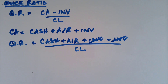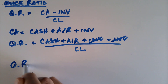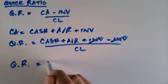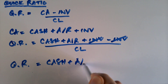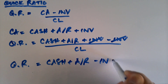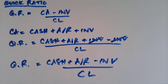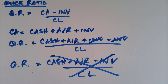But here is the most common mistake that students make. They say QR equals cash plus accounts receivable minus inventory divided by current liabilities — and that is absolutely not true. You can see up here that the inventories cancel each other out. So as long as you've got cash and accounts receivable, you don't need inventory in order to calculate the quick ratio.